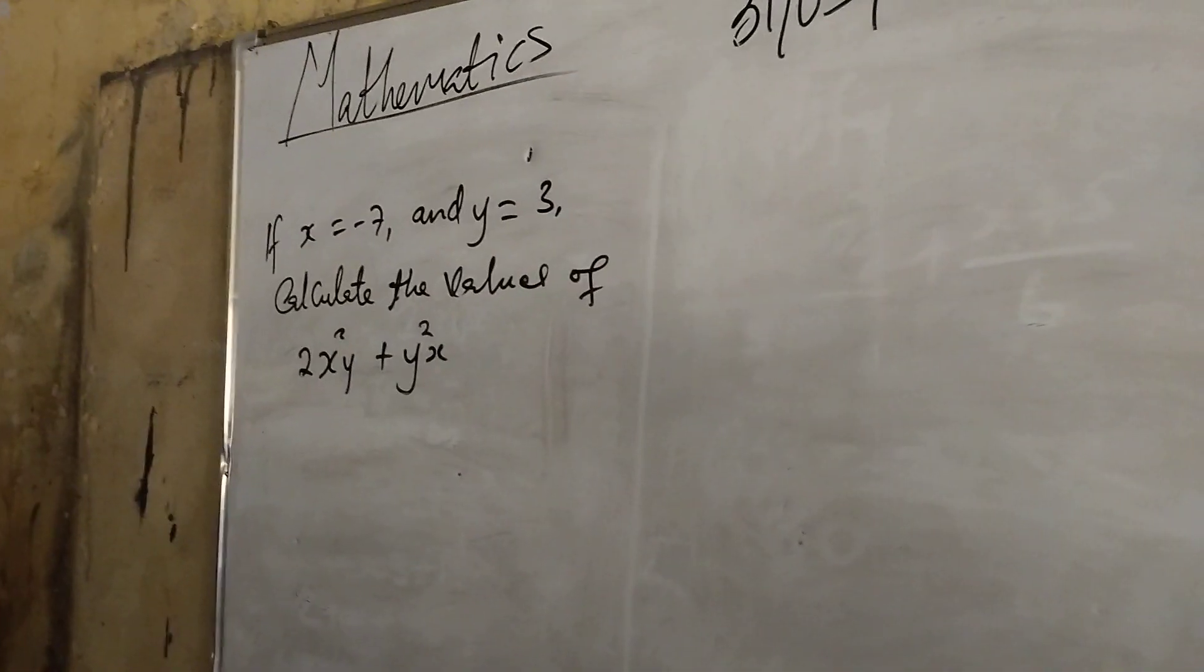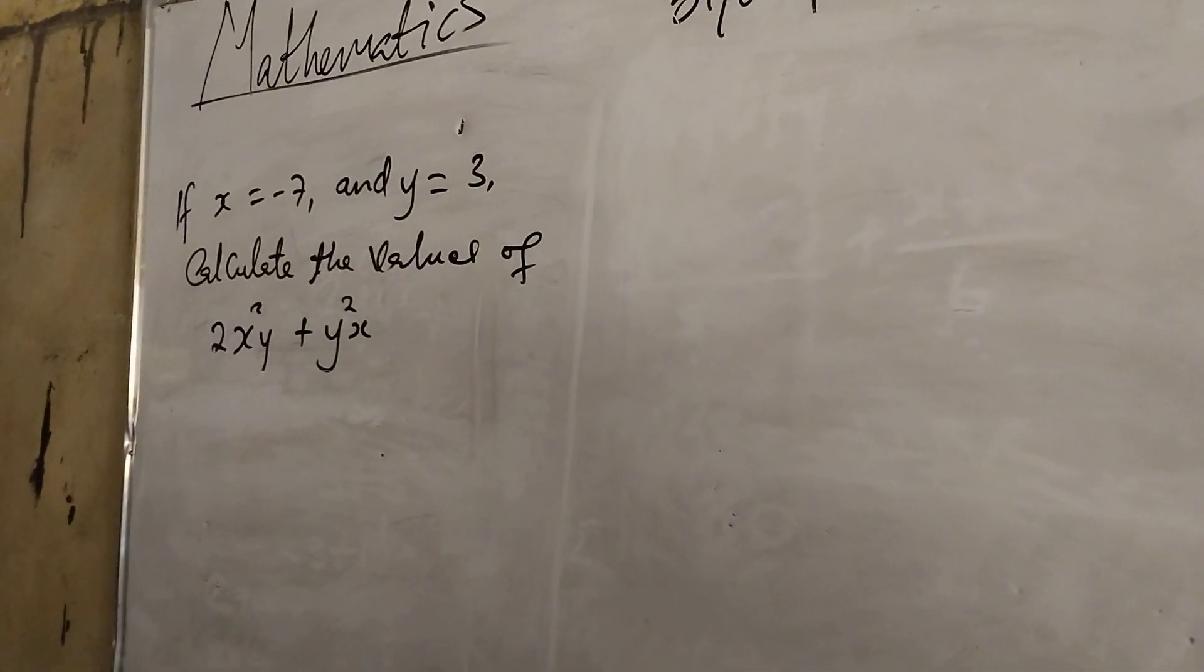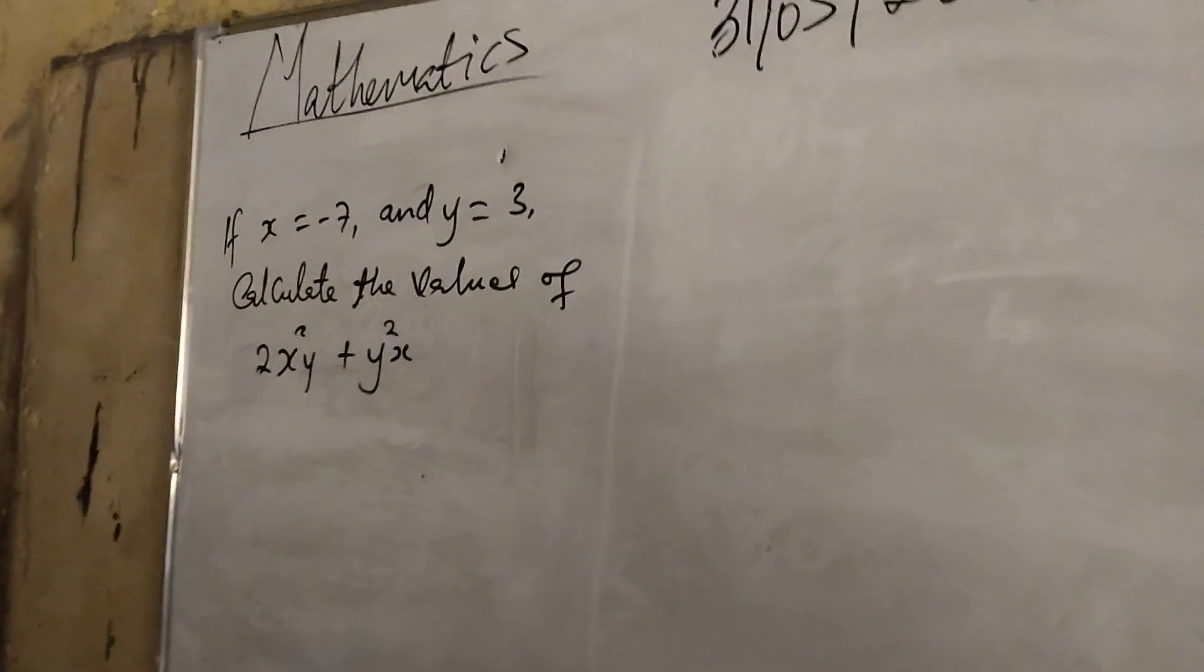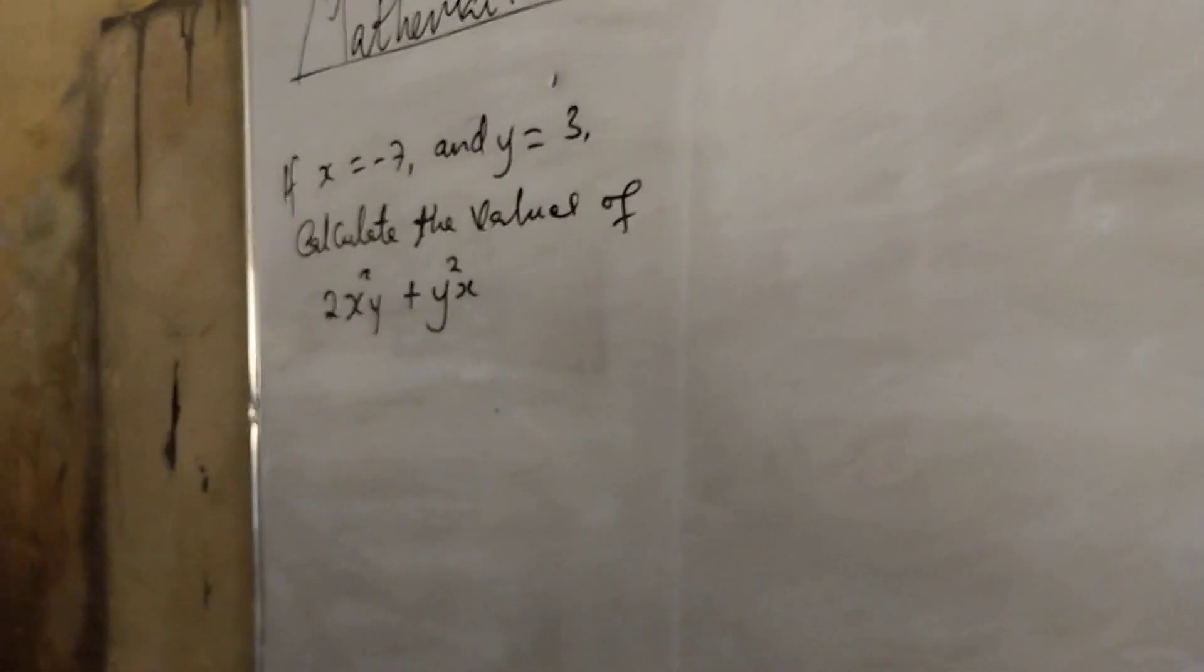We have on the board, if x equals minus 7 and y equals 3, then we are calculating the values of 2x squared y plus y squared x.